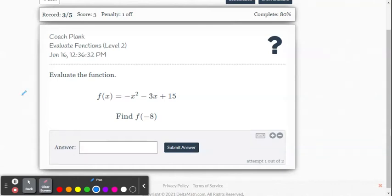This video provides instruction for how to evaluate functions level 2 within the Delta Math online system. f of x equals negative x squared minus 3x plus 15. We're going to evaluate that for f of negative 8.